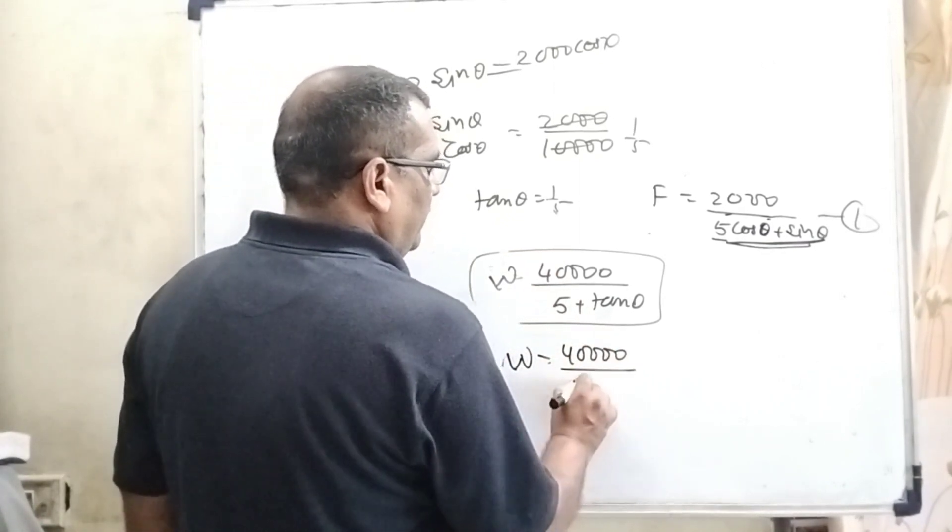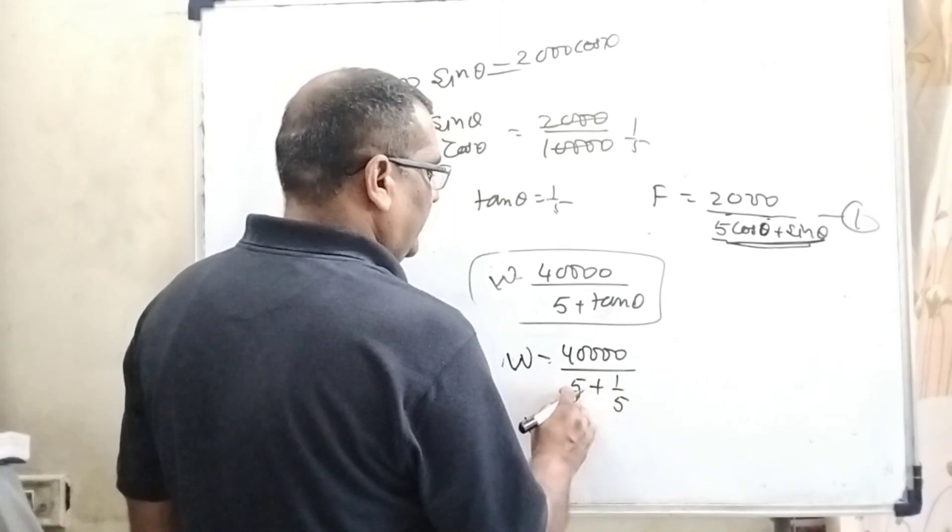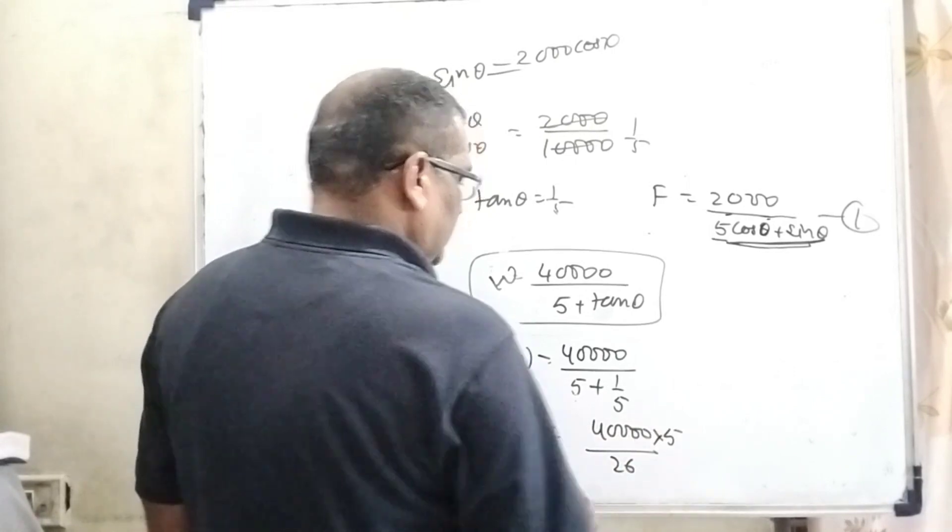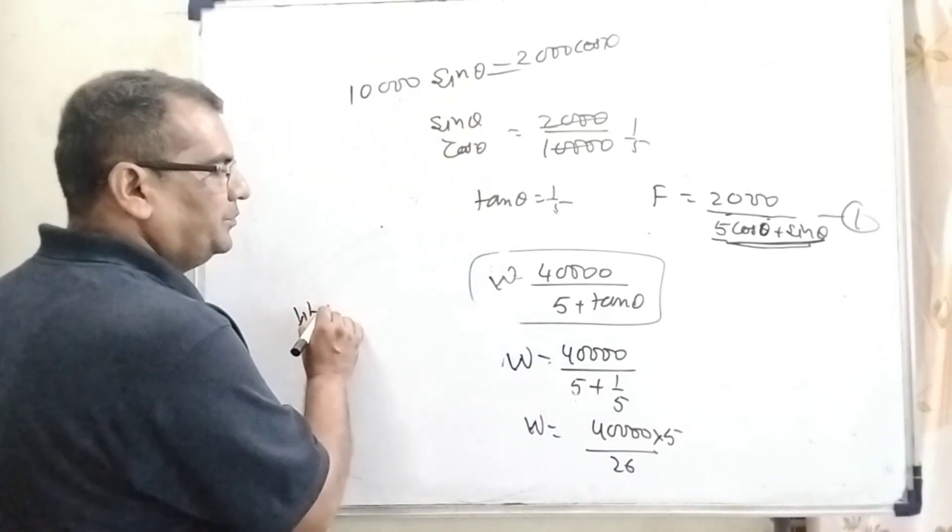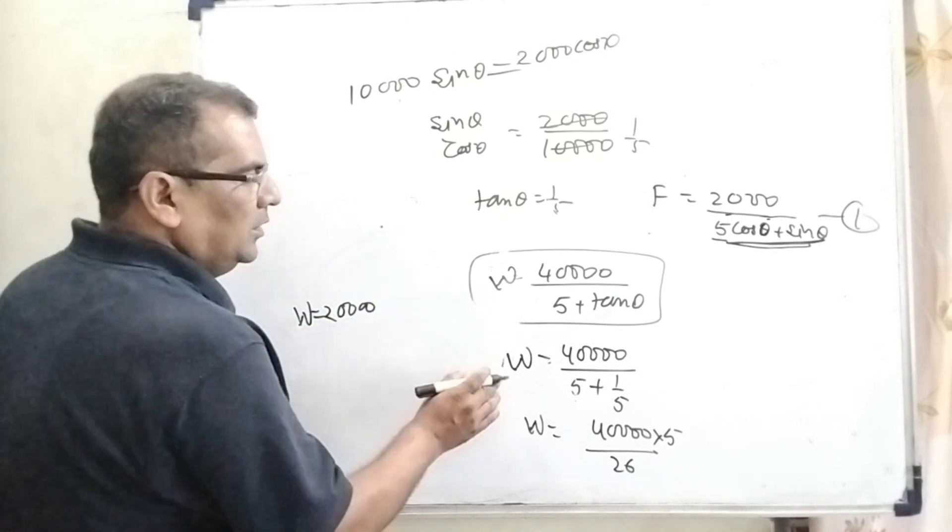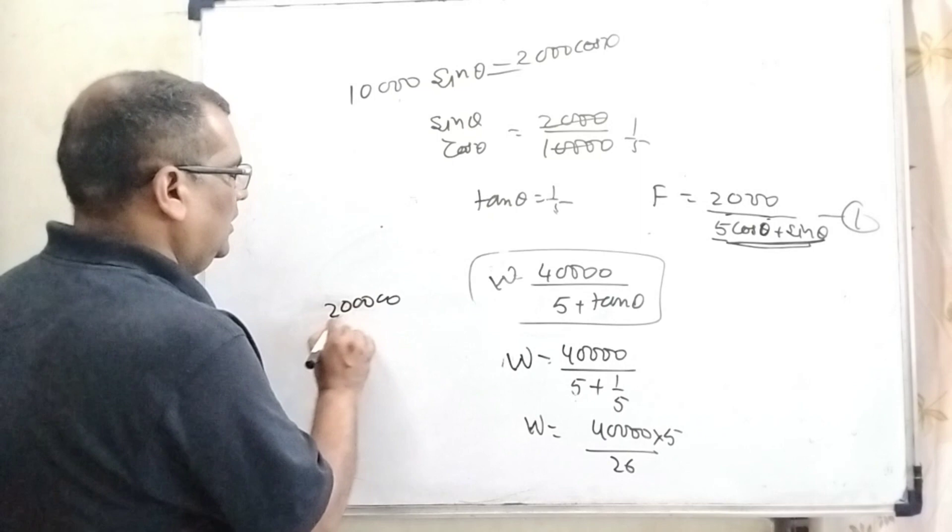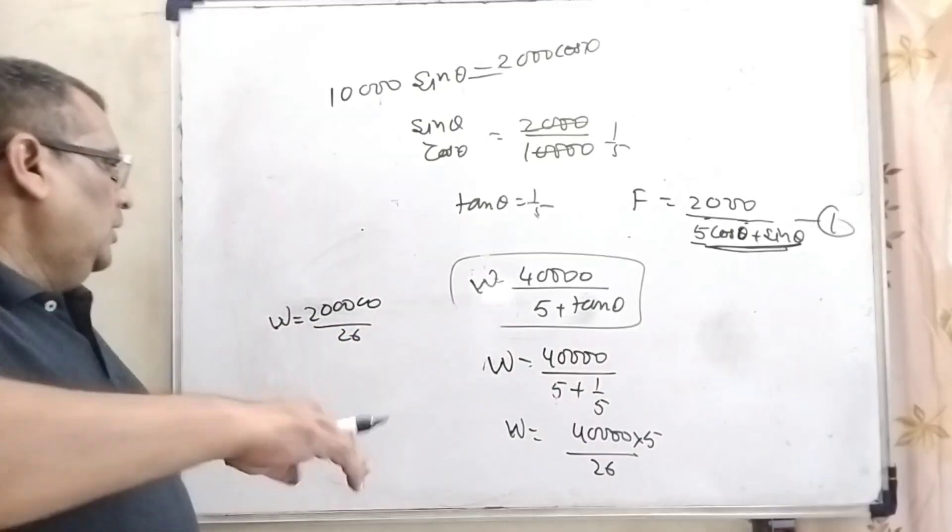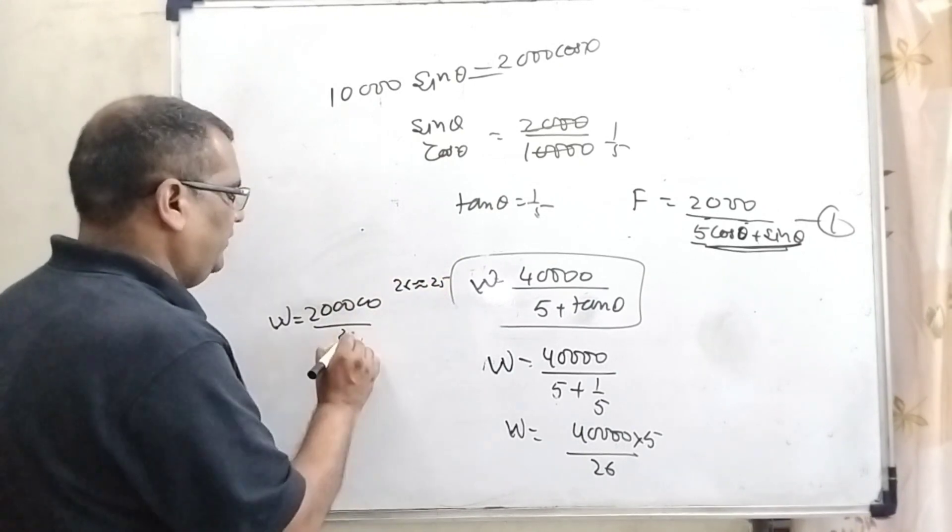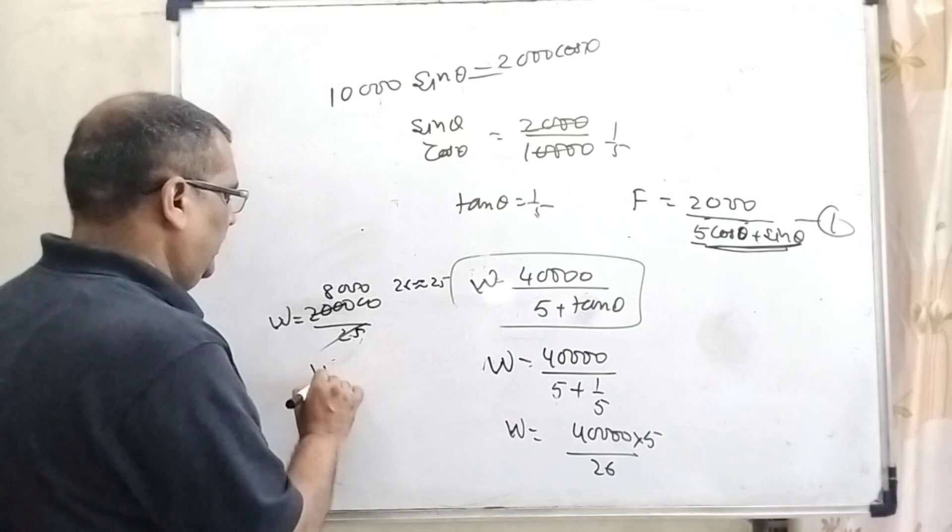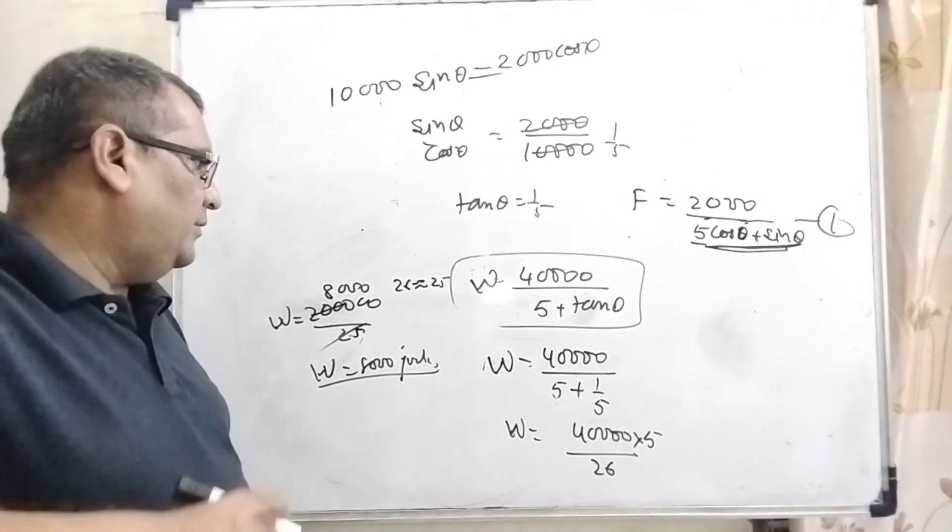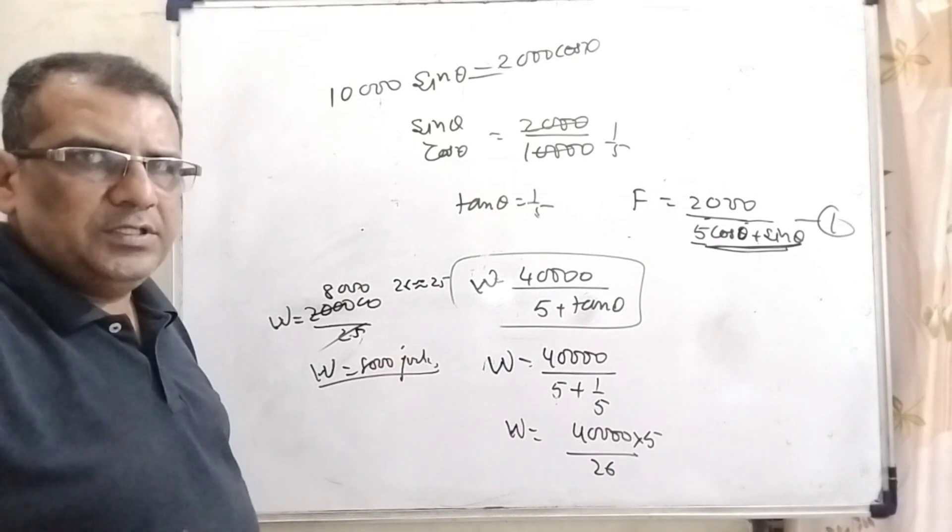Now substitute this value of tan theta in our work done. 40,000 over 5 plus one-fifth. Then W equals 40,000 into 5 over 26. W equals 200,000 upon 26. If we consider 26 approximately near to 25, then 25, it's 200,000 over 25, nearly 8,000. So its value is nearly 8,000, less than 8,000, because we have considered the assumption that in the place of 26 we have put 25.